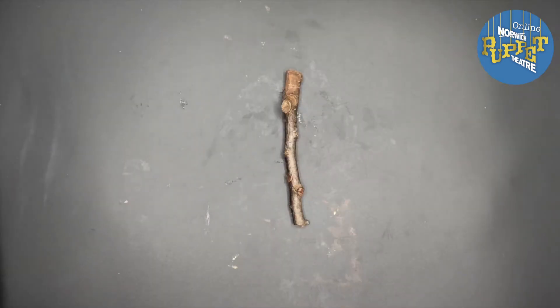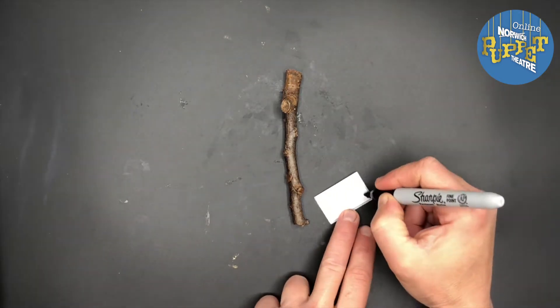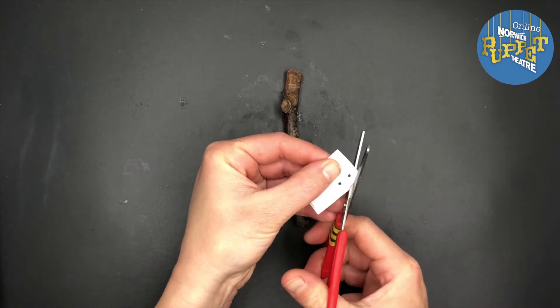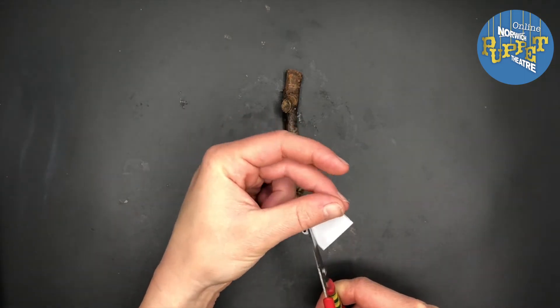Today I'm going to show you how you can make a puppet using a stick. Here is a twig, it's got quite a good nose and face shape already at the top, but I'm going to use a sticky label and just draw and then cut out and stick some eyes onto my twig so they stand out a bit better.